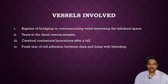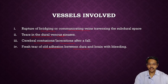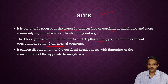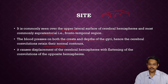Vessels involved in subdural hemorrhage mainly include rupture of bridging or communicating veins traversing the subdural space. Tears in dural venous sinuses may also lead to subdural hemorrhage, as may cerebral contusions and lacerations after a fall. The blood accumulates under pressure along the crests and depths of the gyri; hence the brain retains its normal contour in subdural hemorrhage.